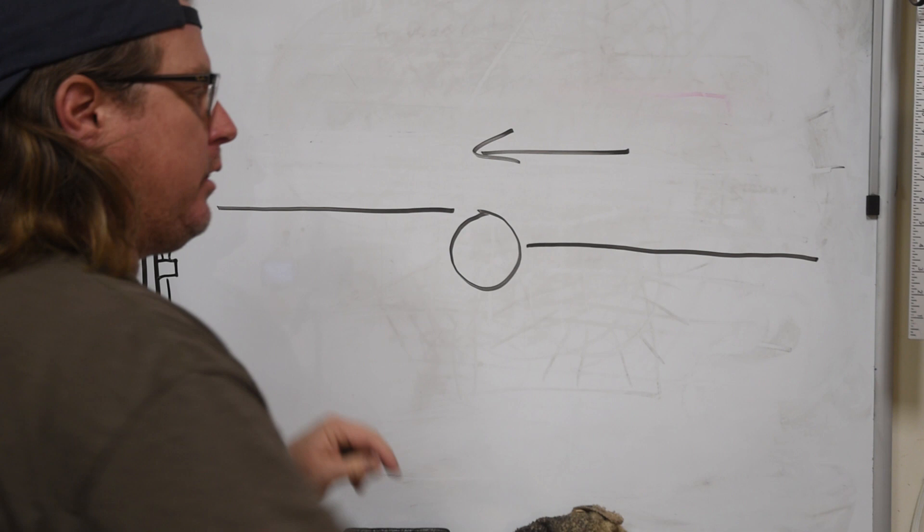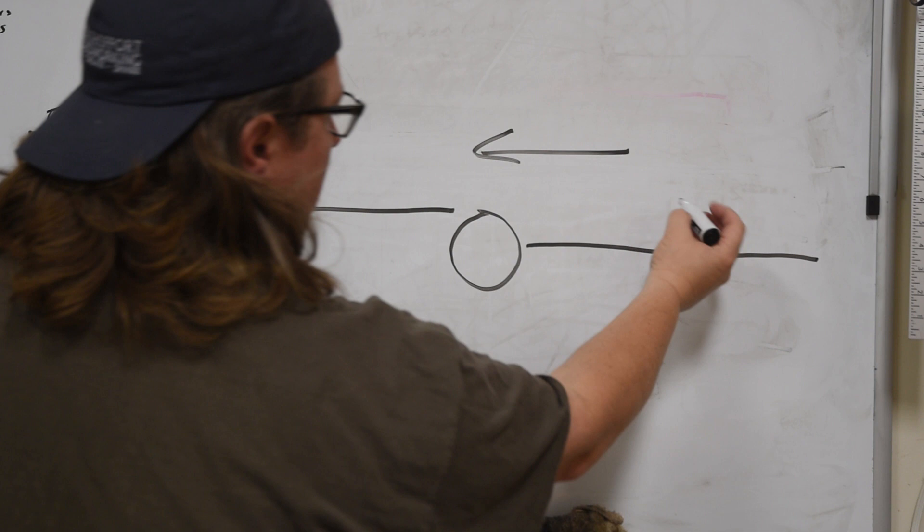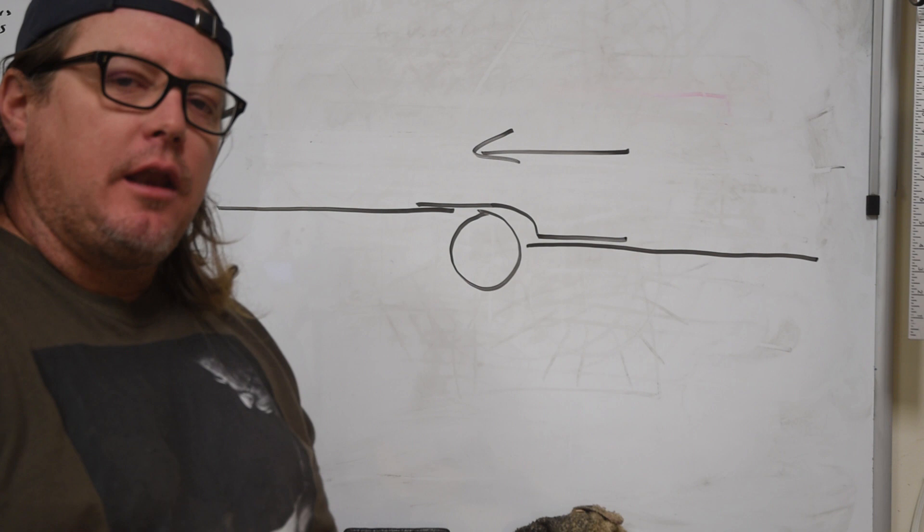So, in essence, as you feed the board across, these have to be absolutely in line with each other across the full width. Otherwise, it won't transition, when the board comes across, it won't transition from one side to the other.